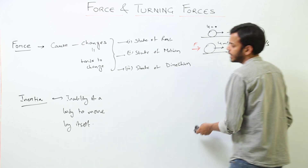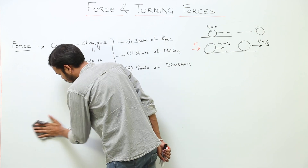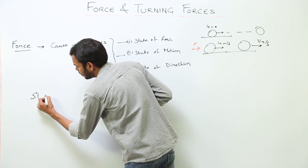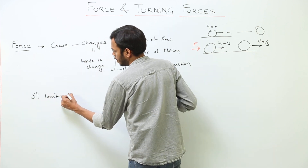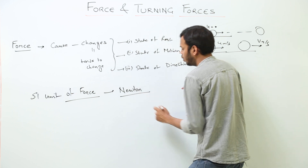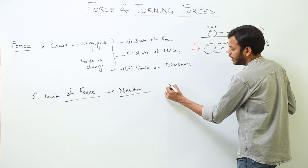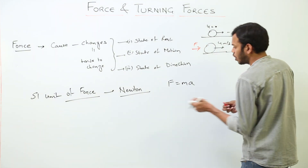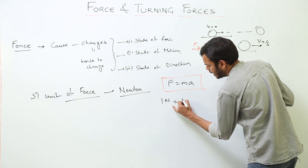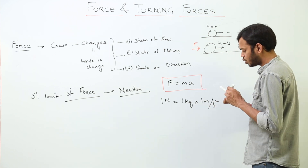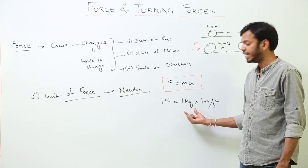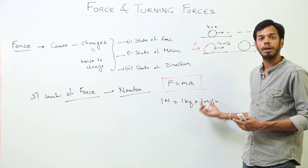How do we measure force? Force is measured by the formula given by Newton's laws of motion. We also need to know the SI unit of force, which is the Newton. According to the formula F = ma, 1 Newton equals 1 kg × 1 m/s². So 1 Newton is defined as the force that acts on a mass of 1 kg and produces an acceleration of 1 m/s².